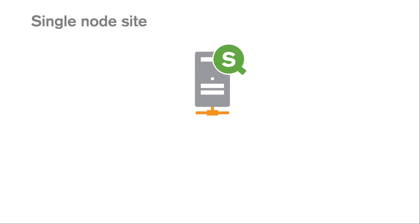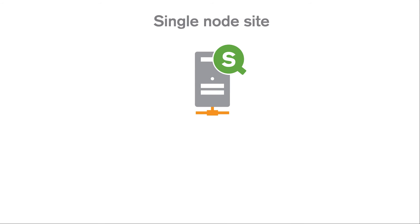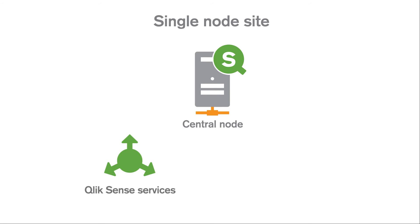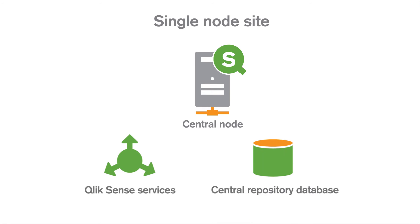A single-node site is the smallest site possible, as it consists only of a single node, that is, a single server machine, which is also the central node of the site. It also contains data for the entire site in the central repository database.